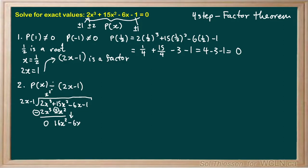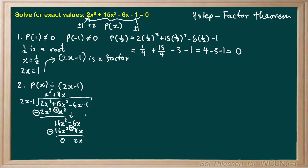I bring down negative 6x and ask: what do I multiply 2x by to get 16x²? The answer is positive 8x, so I write that up top. Then I multiply 8x by 2x minus 1, giving 16x² minus 8x. I subtract — signs flip — so 16x² minus 16x² gives 0, and negative 6x plus 8x gives 2x. Then I bring down negative 1.